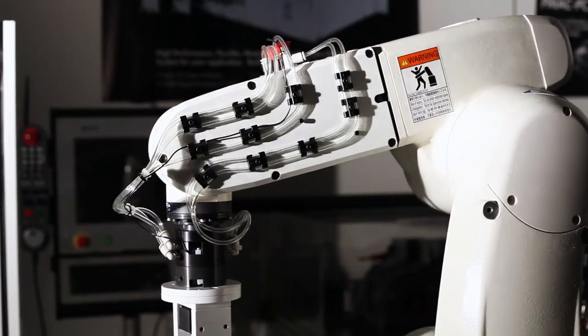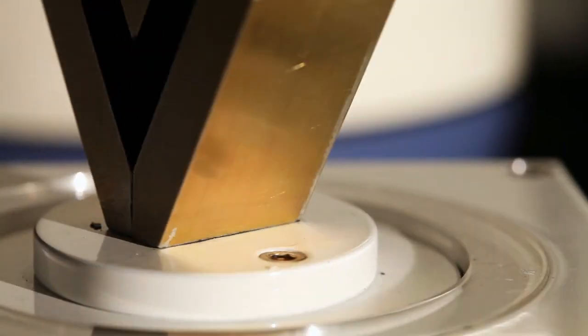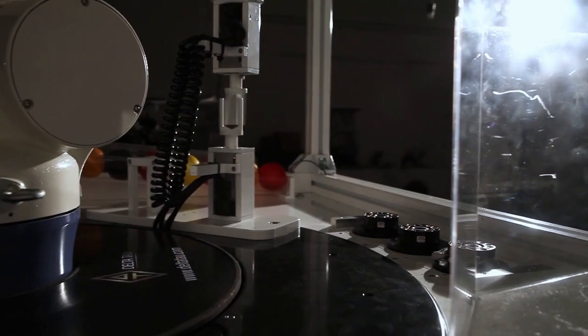This demonstration is unique in that we're using one controller, the Power PMAC, to control not only the 6 degree of freedom robot arm, but also every other axis in the system, up to 11 axes total for this demonstration.